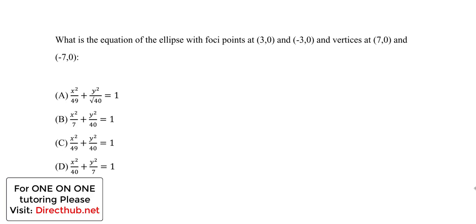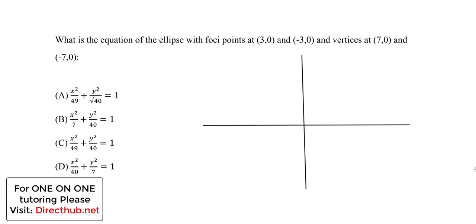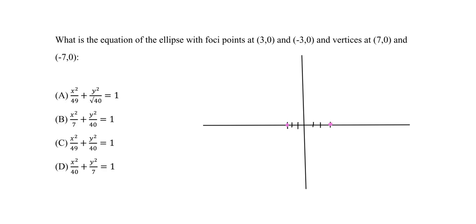Let's begin by drawing a figure of what we're given. This is my x-axis and y-axis. We're told we have the foci points at (3, 0) and (-3, 0). So counting 1, 2, 3 — we have a point here for one focus, and at negative 3 we have another focus point. These are our foci points, and we're told the vertices are (7, 0) and (-7, 0), so we're still on the x-axis.